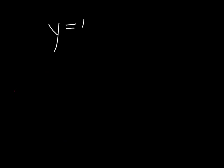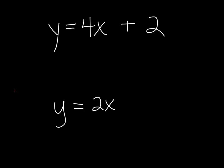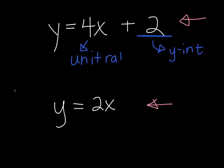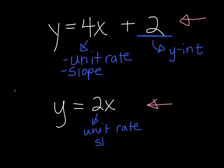A couple last things: looking at the two equations we studied — y = 4x + 2 and y = 2x. We know the second one is proportional and the first is not. The number added on is where it crosses the y-axis — that's the y-intercept. The number we're multiplying by is the unit rate, how much it is per 1, and it also shows us the slope. The same applies to the proportional equation: the multiplier shows the unit rate and slope. You'll want to add that to your notes, and we'll continue learning more about this during the chapter.